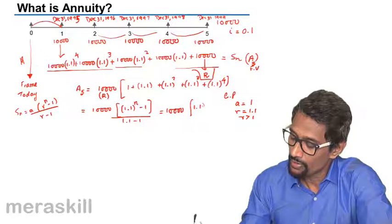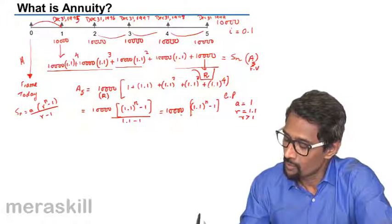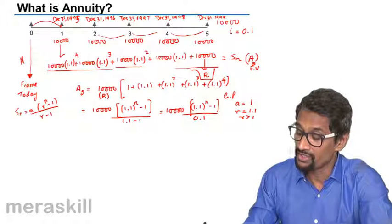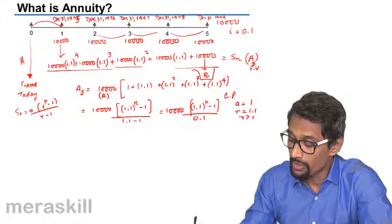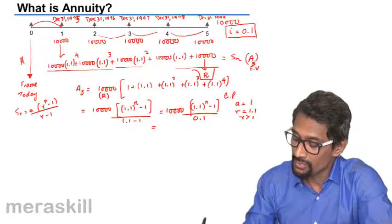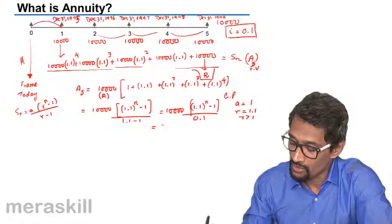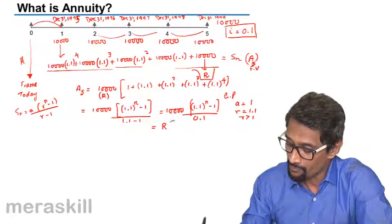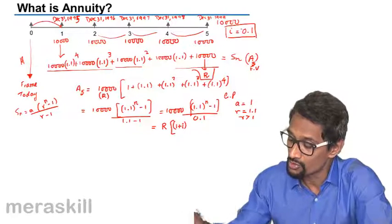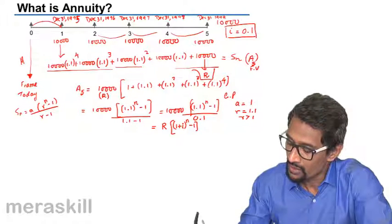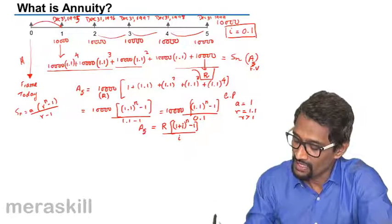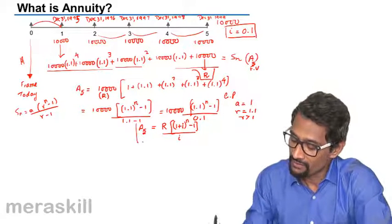That gives us ten thousand into 1.1 times (1.1 raised to n minus 1) divided by 0.1. For a general formula: 1.1 is simply (1 + i) where i = 0.1, and ten thousand is the installment amount R. So A₅ equals R times (1 + i)^n minus 1, divided by i.